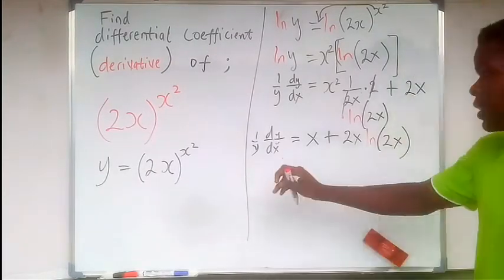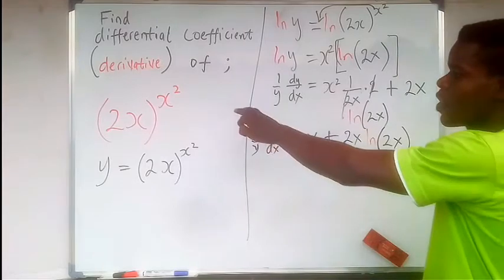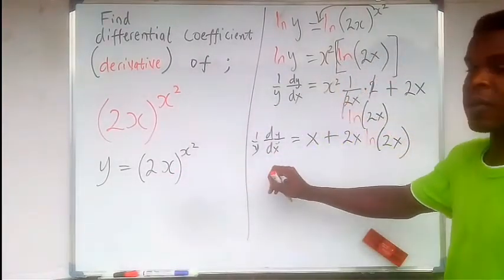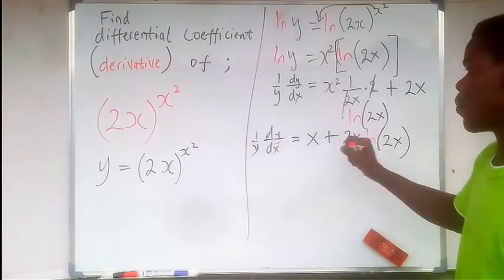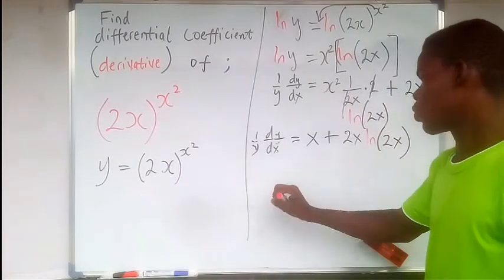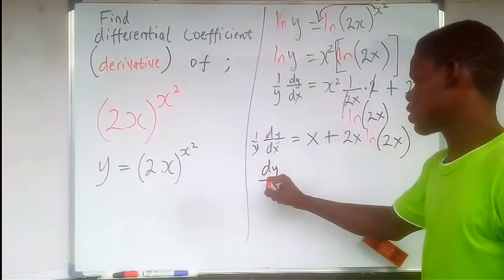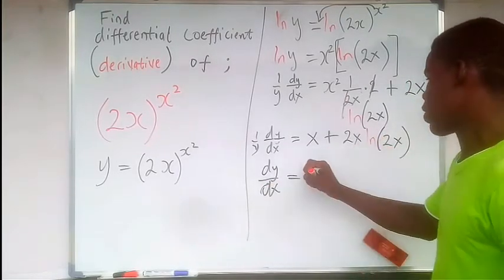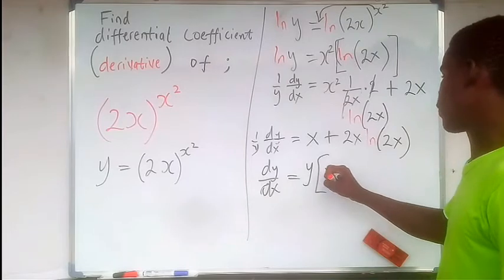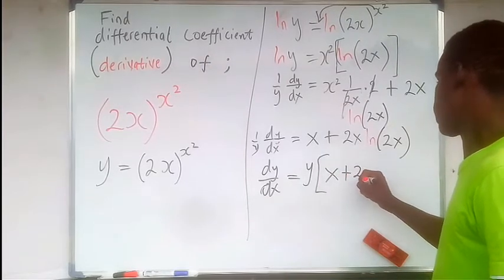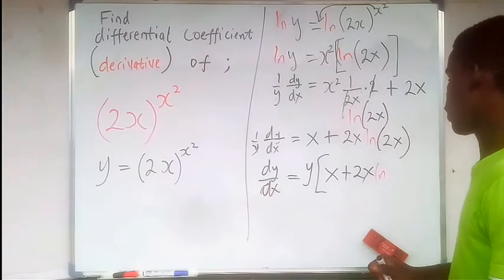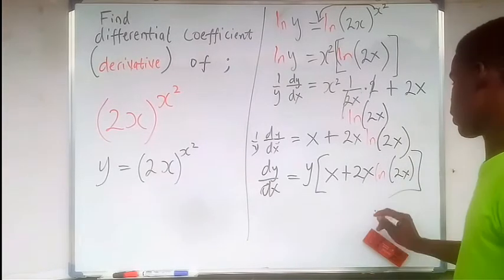So at this point, let's find - because our aim was to find the derivative of this function, this function was defined to be y. Therefore we need to find dy/dx. So to find dy/dx, we make dy/dx the subject of the formula here by multiplying both sides of the equation by y. So we're going to have that dy/dx is going to be equal to y times the whole of this: x plus 2x ln of 2x.